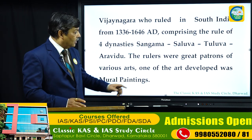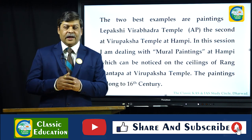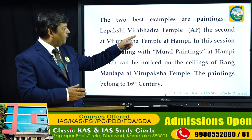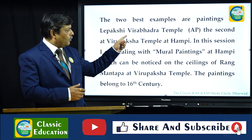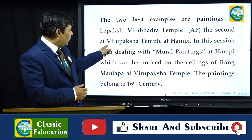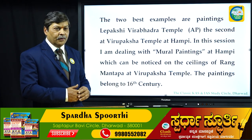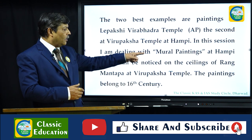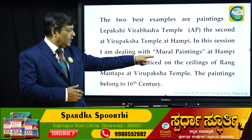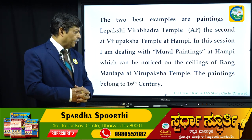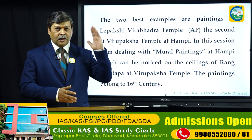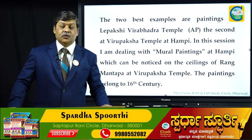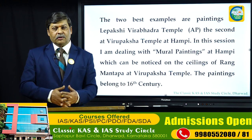Hampi has the main examples of mural paintings from this period. The two best examples are: first, the paintings at Lepakshi Virabhadra Temple in Andhra Pradesh; and second, the paintings at Virupaksha Temple, Hampi. In this session I am dealing with the mural paintings at Hampi, which can be noticed on the ceilings of the Rangamantapa at Virupaksha Temple. These paintings belong to the 16th century.